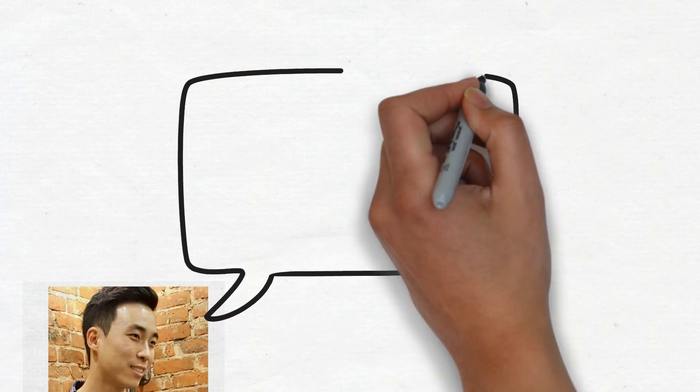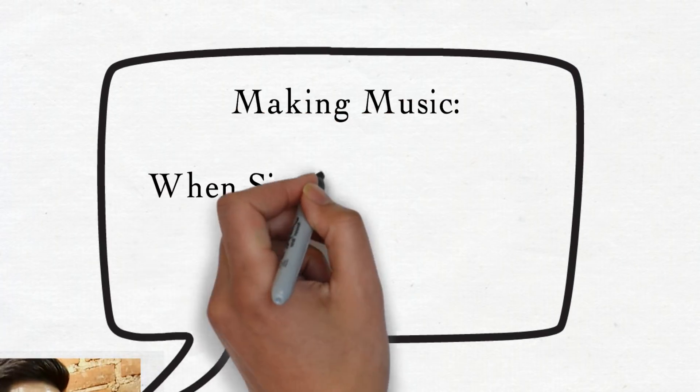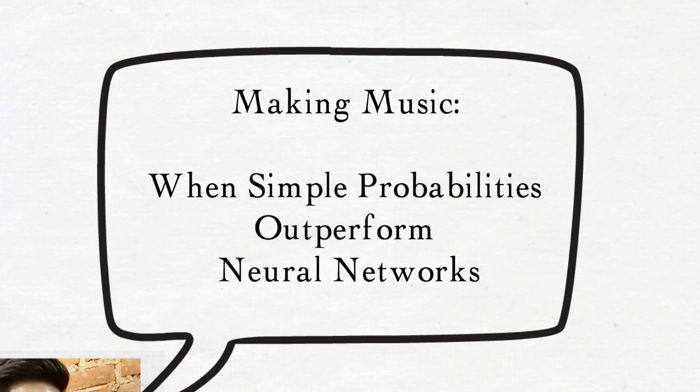Hello, my name is Hebi Chan Jung, and this is my passion project that I call Making Music, When Simple Probabilities Outperform Neural Networks.